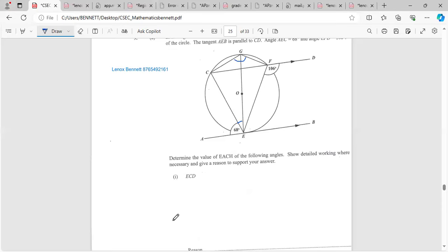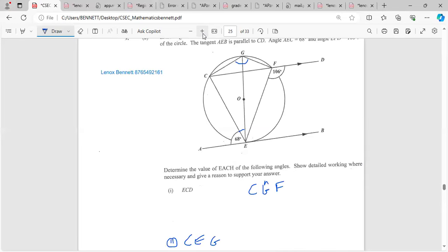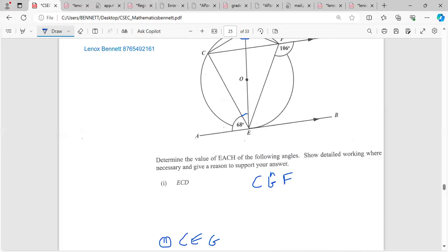Let me write these angles so we don't have to go down. They want us to figure out this angle right here, and the next one was CGF, which is this angle. So CEG and then they want us to find CGF, and we must give reasons. Try it and let's see if you guys will be able to get the full marks.